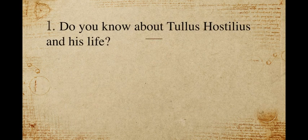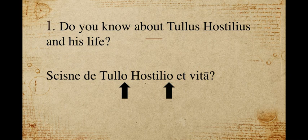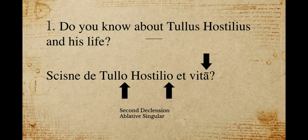Alright, let's look at the first sentence — number one: 'Do you know about Tullus Hostilius and his life?' In these sentences we're going to focus on the endings of the nouns. The verb stuff, if you're still having difficulty, it's okay — we'll have other ways to practice it. The answer would be 'scisne de Tullio Hostilio et vita.' The endings change because Tullus Hostilius are both second declension, but since you have the preposition 'de' in front of them, they go ablative singular, so the -us changes to -o. Vita keeps that -a but with a long mark, making it ablative singular in the first declension.